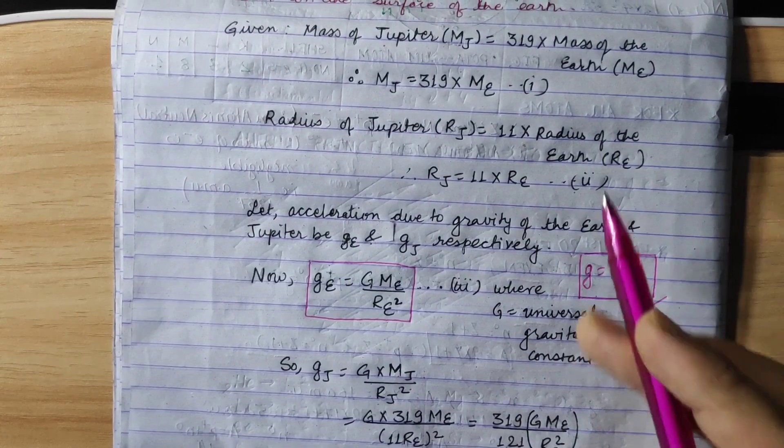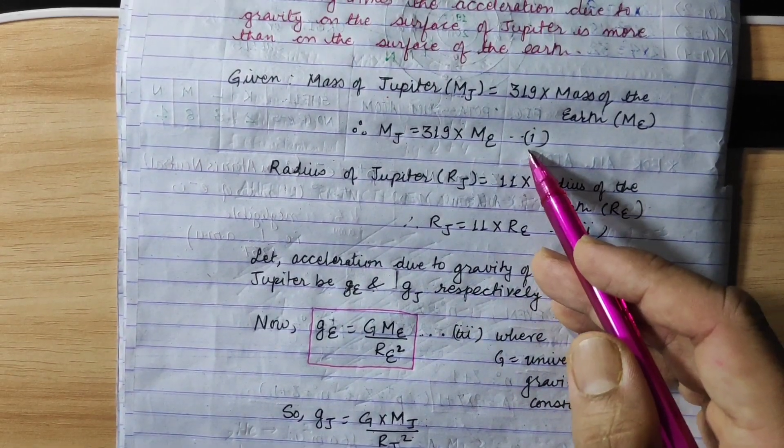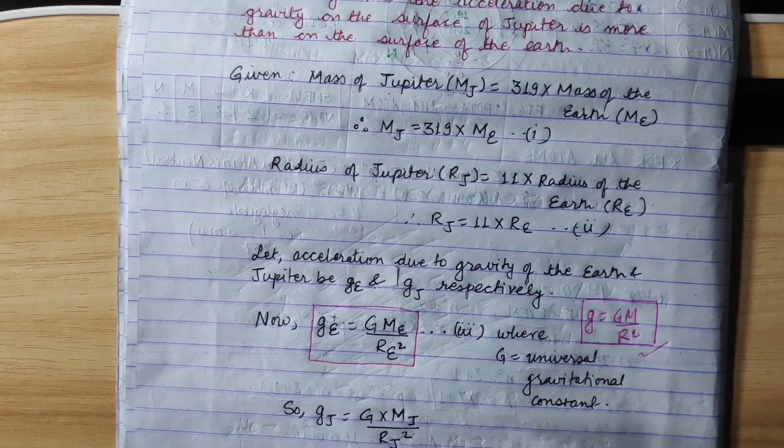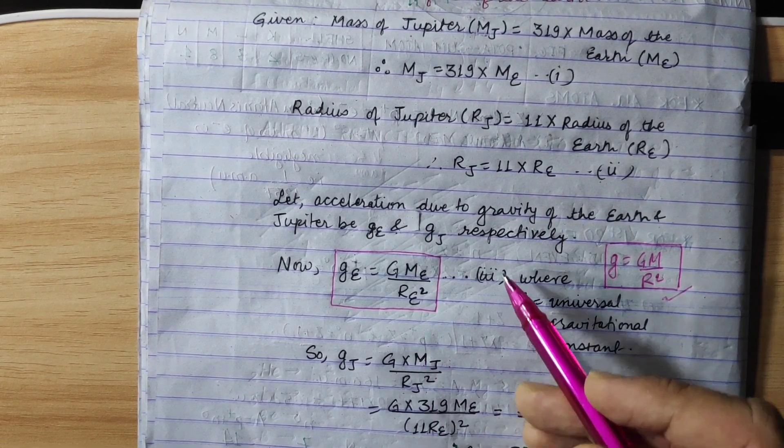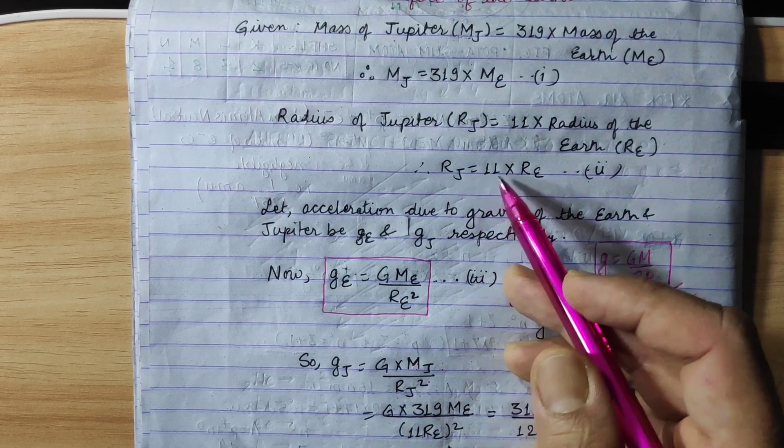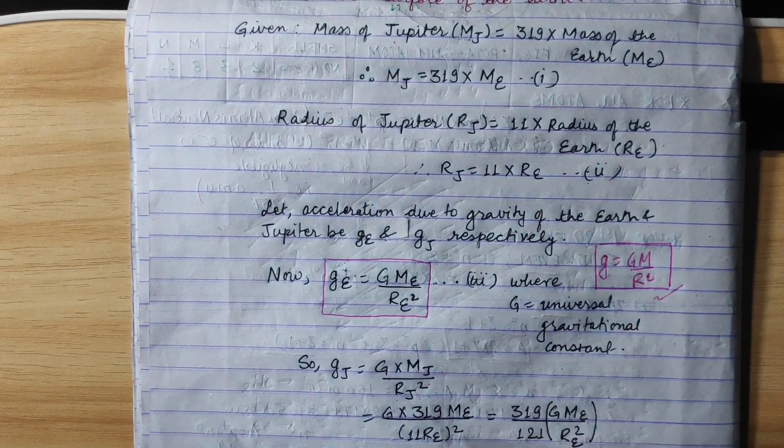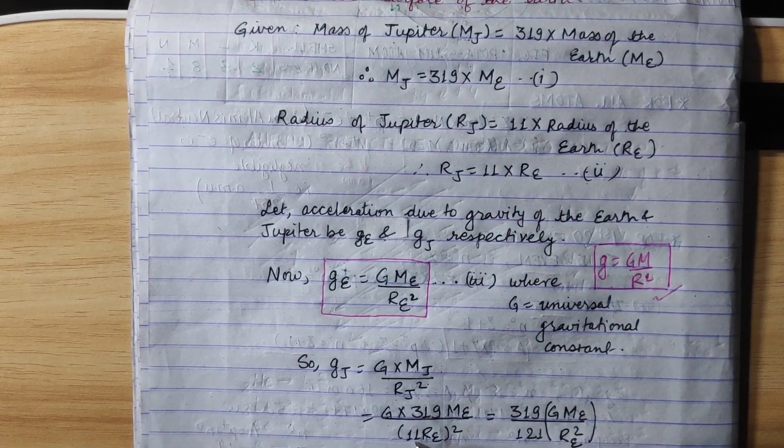Now let's replace it in equation 1. So Rj is equal to 11 times Re. 11 Re squared.